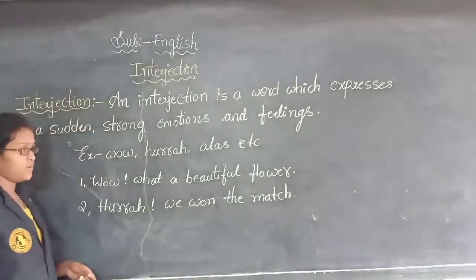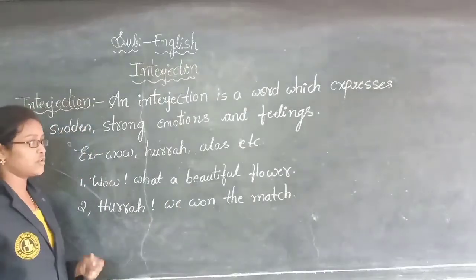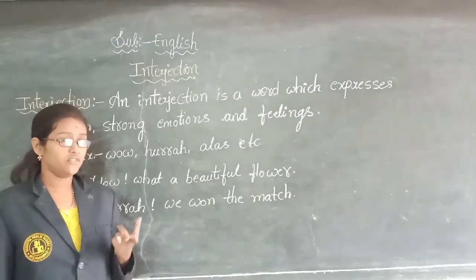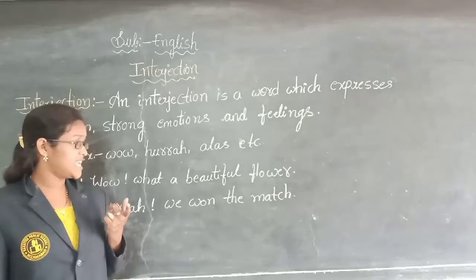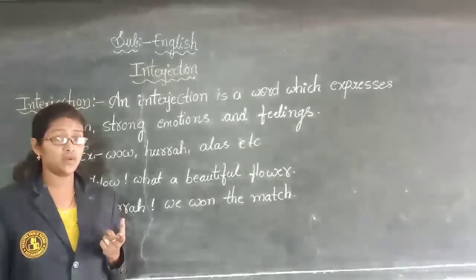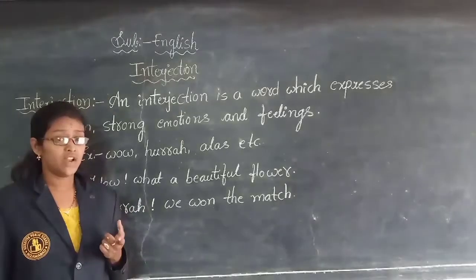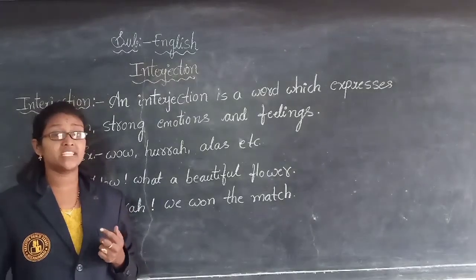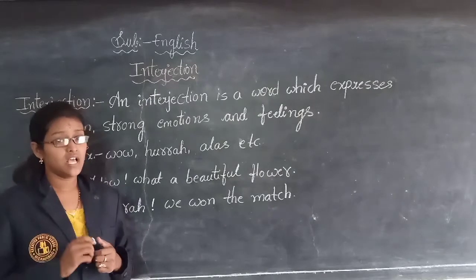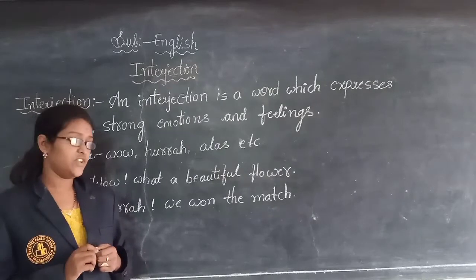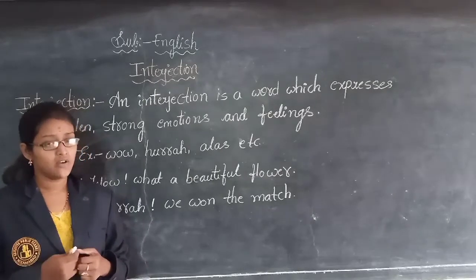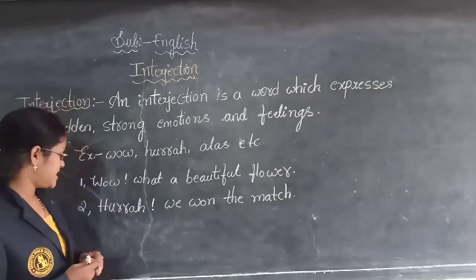For example, you have seen a rose flower or jasmine, whatever it may be. By seeing that flower, what should we say? Wow, what a beautiful flower. Means we are expressing our feelings towards that flower.